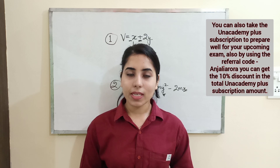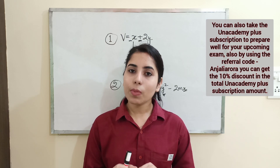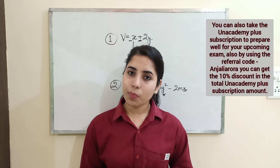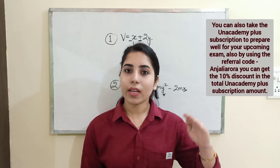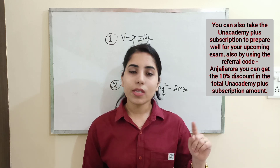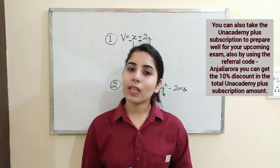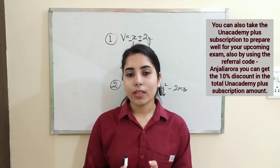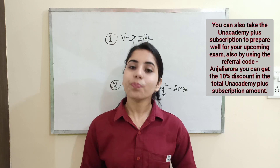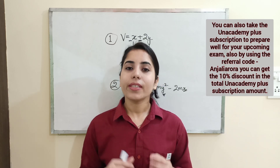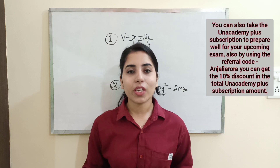The steps to take the subscription are: step one, download the Unacademy learning app; step two, log in to the app; step three, select your goal — if you are preparing for CSIR Net Physics, select CSIR UGC Net. Then in the left-hand side corner click the three lines, click on Plus, then click on Get Subscription. Use the referral code 'AnjaliaArora' (capital A, rest lowercase) to get a 10% discount on the total Unacademy Plus subscription amount. Thank you very much for watching this video till the end.